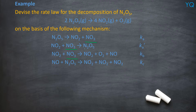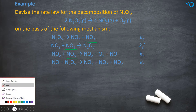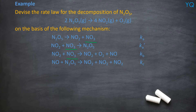Let's look for any more intermediates to double check. NO2 and N2O5 and N2O4 are reactants or products, but NO does not exist as a reactant or product. So NO is another intermediate. Let's mark it out in red. So we have 2 intermediates: NO3 and NO.